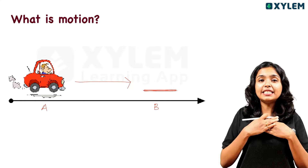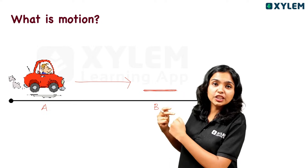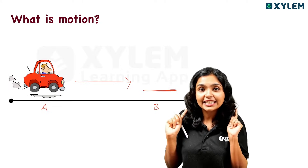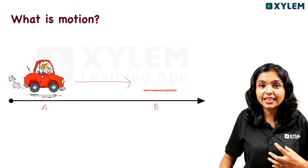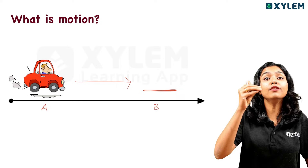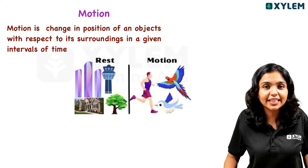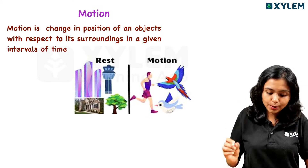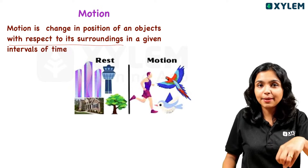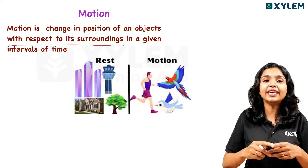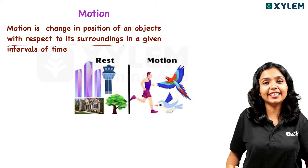We are starting to change our surroundings, and we are starting to change our position in our own way — with respect to surroundings and also with time. Motion is the change of position with respect to its surroundings in a given interval of time. If there is no time interval and no position change based on surroundings, then that object is not in motion.